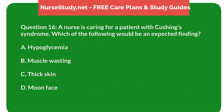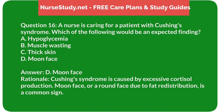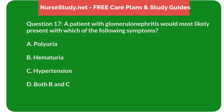Question 16: A nurse is caring for a patient with Cushing's syndrome. Which of the following would be an expected finding? A) Hypoglycemia, B) Muscle wasting, C) Thick skin, D) Moon face. Answer: D, Moon face. Rationale: Cushing's syndrome is caused by excessive cortisol production. Moon face, or a round face due to fat redistribution, is a common sign.